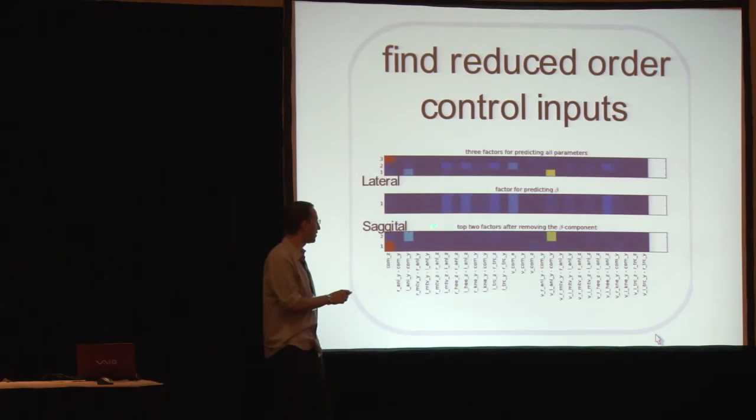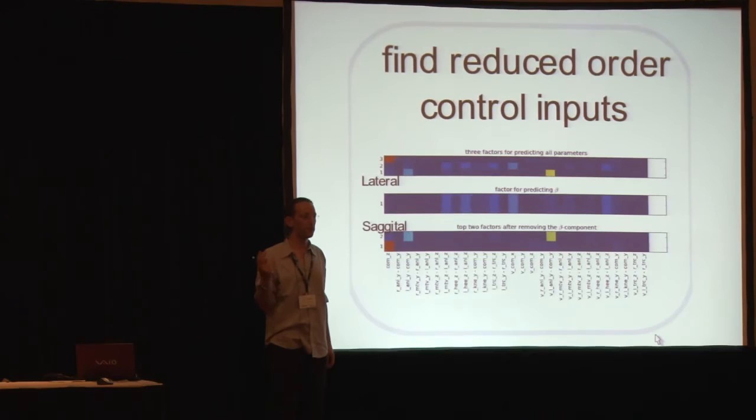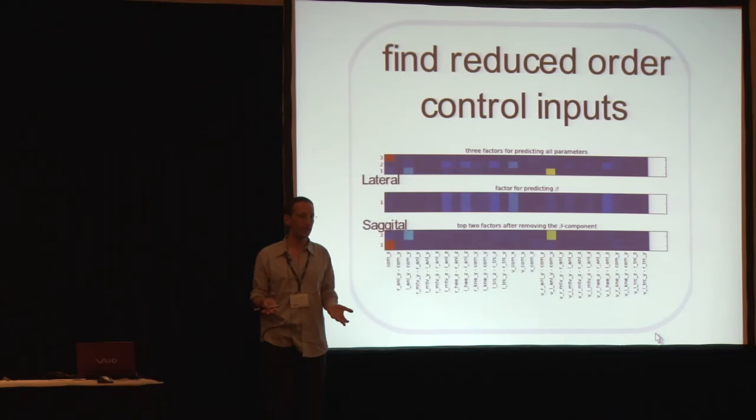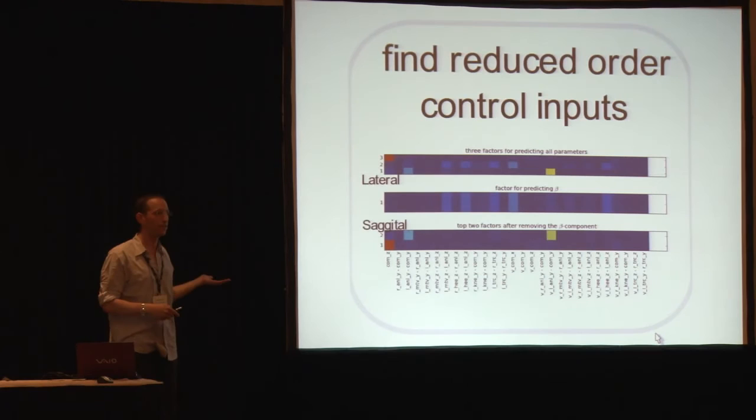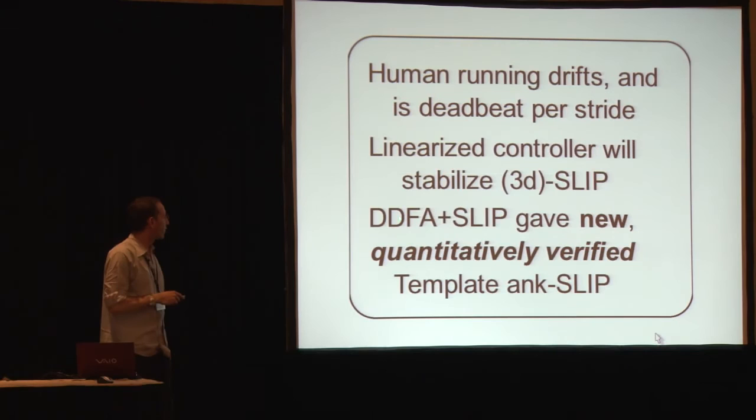And these two variables, so just this two-dimensional data, will tell you how to set all these five SLIP parameters for that next step. So we've taken SLIP down to a feedback law that's essentially, if you care only about the sagittal plane, a two-dimensional feedback law that actually recovers over 90% of the predictive value that we got from using the entire 30-some dimensional state.